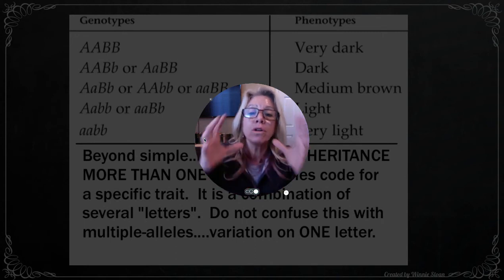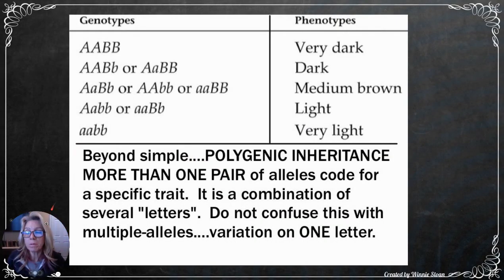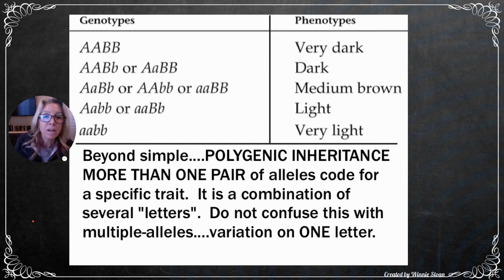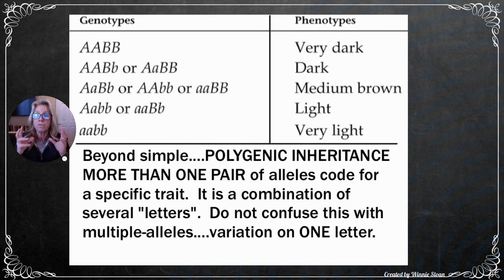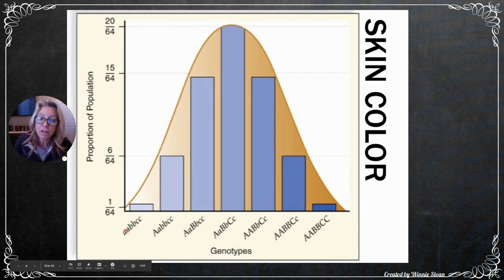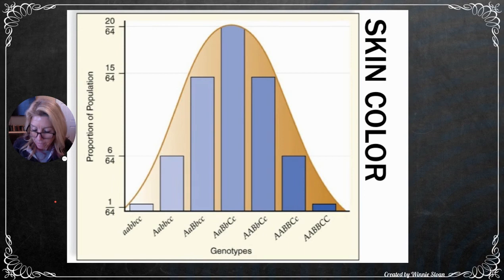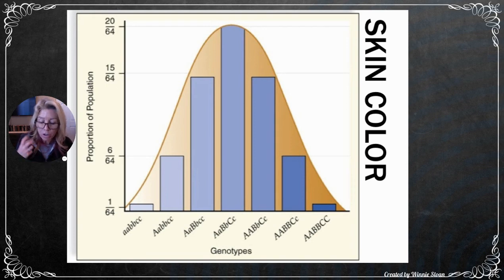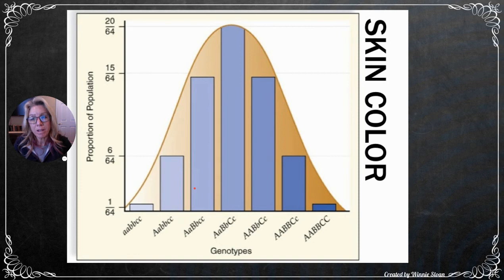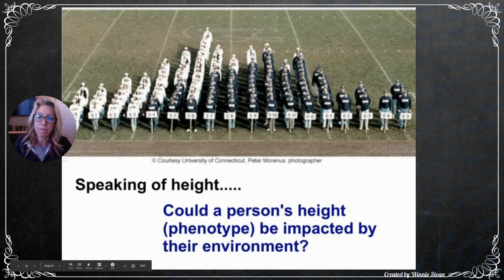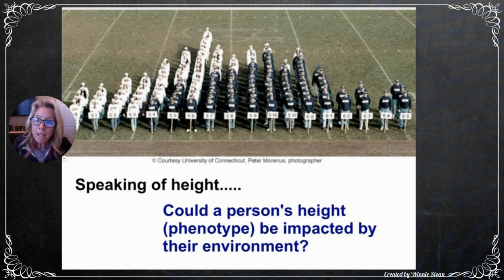Polygenic inheritance definition: when one trait is governed by two or more sets of alleles. Examples include skin color and intelligence — you're not simply 'super smart' or 'super stupid,' but have R's, T's, and Q's all contributing to that single phenotype. Traits controlled by polygenes are also subject to environmental influences, such as tanning affecting skin color.